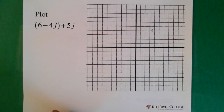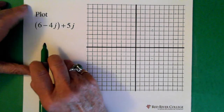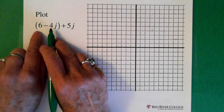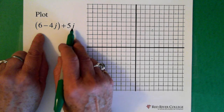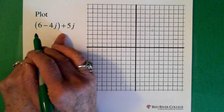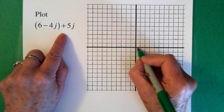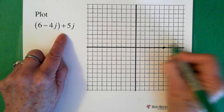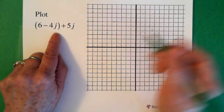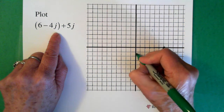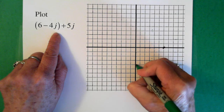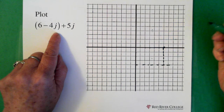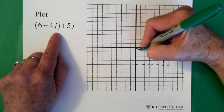Alright, so next one. Here we have 6 minus 4j added to 5j. So the first thing I'm going to do is plot the 6 minus 4j and the 5j. So 6 minus 4j — we're in the positive real: 1, 2, 3, 4, 5, 6 — right here. And then minus 4j, so we're going down the imaginary axis: 1, 2, 3, 4. And then essentially we're just drawing a line over to here, and our vector is here.